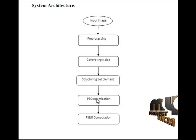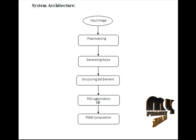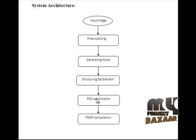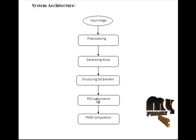It optimizes the problem by having a population of candidate solutions, with particles moving around in the search space according to simple mathematical formulas over particle position and velocity. Each particle's movement is influenced by its local best known position, and it is also guided toward the best known position in the search space. In the particle, we find the mean value for the neighboring pixels. The mean value will be replaced as the pixel value, and this continues until the number of iterations is reached.